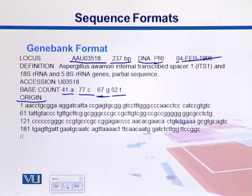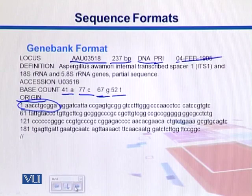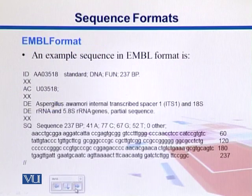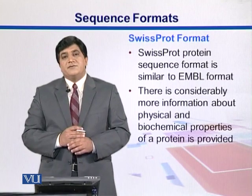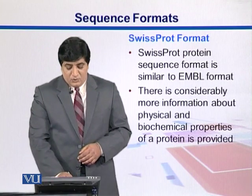The word ORIGIN tells us the actual sequence is beginning. Lines contain 60 bases split into chunks of 10 — a standard practice. Sequences end with double slashes. The EMBL format is similar to GenBank: we have an ID, accession number, descriptions represented as DE, and the sequence starts where the word SQ appears, with similar line formatting, and ends with double slashes.